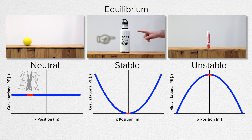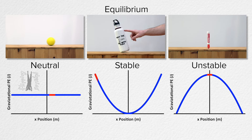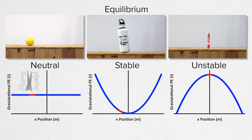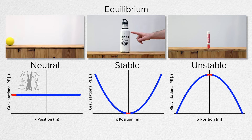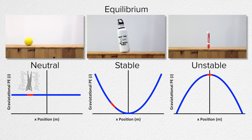This water bottle is in stable equilibrium because its gravitational potential energy increases as its position moves away from the equilibrium position. This is because the center of mass of the water bottle goes up as the position goes away from equilibrium. In other words, the water bottle naturally returns back to the equilibrium position when it loses gravitational potential energy.